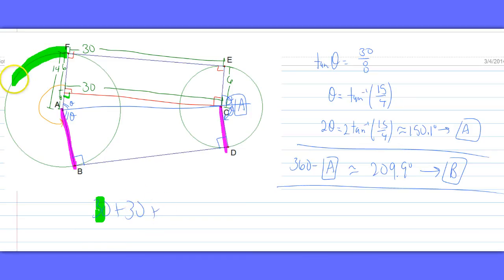Plus that arc length. That arc length is going to be the central angle, which we have saved as B, so alpha B over 360 times 2 times pi times the radius of 14.